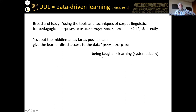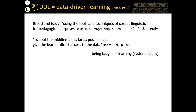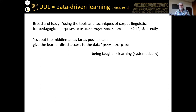Going back to the original definitions by Tim Johns, who coined the phrase DDL, he wanted to cut out the middleman — the teacher — as far as possible and give the learner direct access to the data. In a foreign language situation 30 years ago, the only contact you had with the foreign language would have been in class, with the teacher, in the coursebook. Now everybody has access to the internet, so direct access to data is no longer rare. The philosophical underpinning is to move away from being taught toward active, systematized learning — and that's where DDL is still relevant today.